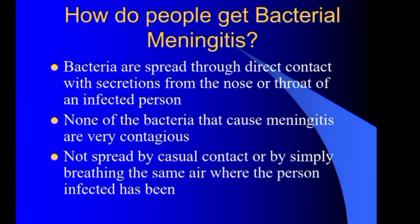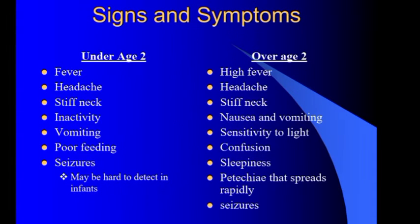Regarding how people get bacterial meningitis, bacteria are spread through direct contact with secretions and via the respiratory route from throat-infected persons. None of the bacteria that cause meningitis are very contagious; they are not spread by casual contact or by simply breathing the same air where an infected person has been.